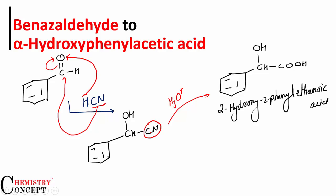On carrying out hydrolysis, the cyanide group converts into a carboxylic acid, giving us the desired product — alpha hydroxy phenyl acetic acid. If you have any doubt, you can ask in the comment section.